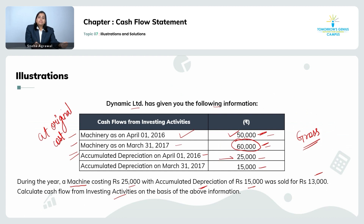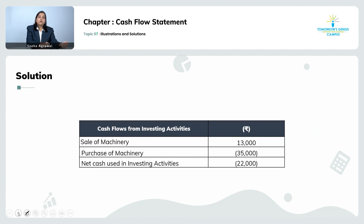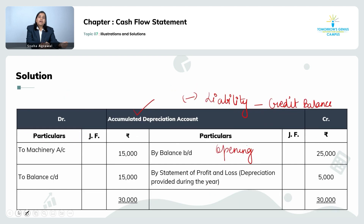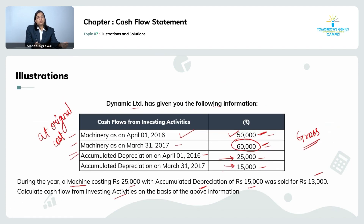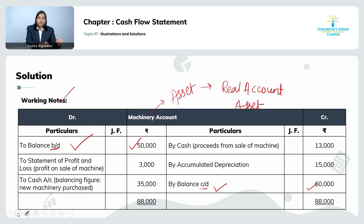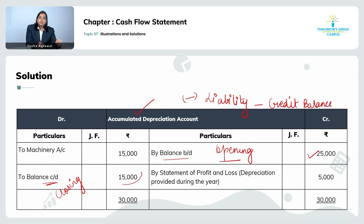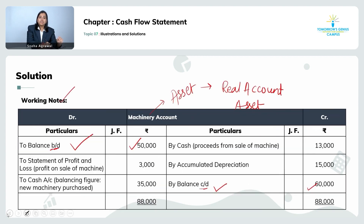The opening balance of accumulated depreciation is given as 25,000, so I'll write it on the credit side as 'by balance brought down: 25,000.' On the debit side, I will write the closing balance. The closing balance of accumulated depreciation is 15,000, so I'll write that on the debit side of the accumulated depreciation account.